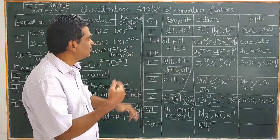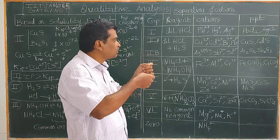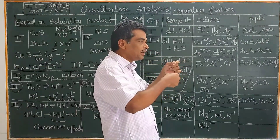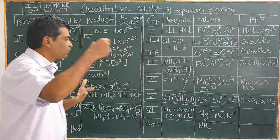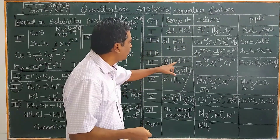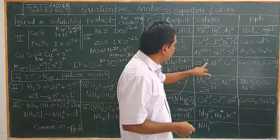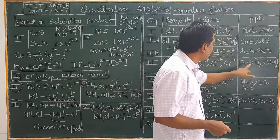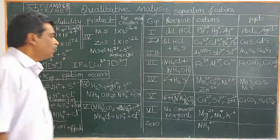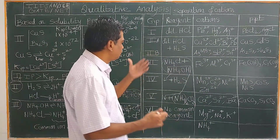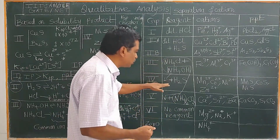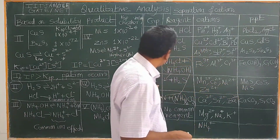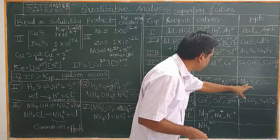If they are not present, then to the same test tube you add 2 or 3 drops of concentrated nitric acid and heat it. It will oxidize and remove the hydrogen sulfide present in the reaction mixture. Then you add ammonium chloride and ammonium hydroxide. The third group metal ions — Fe³⁺, Al³⁺, Cr³⁺ — are deposited as hydroxides: ferric hydroxide, chromium hydroxide, and aluminium hydroxide. If there is no precipitate in the third group, pass H₂S gas, and the fourth group metal ions are precipitated as sulfides.